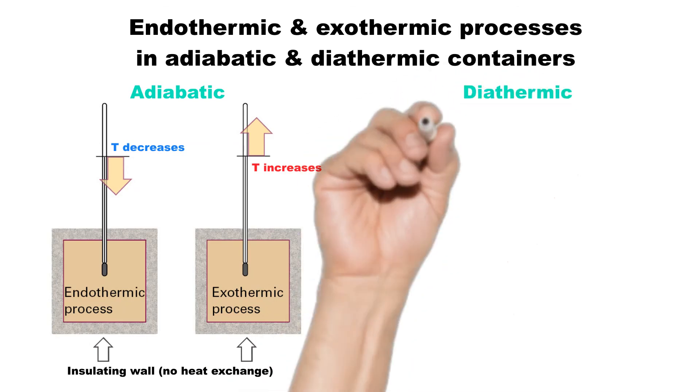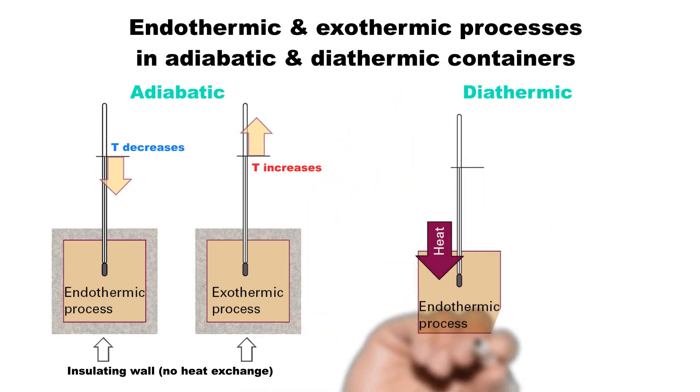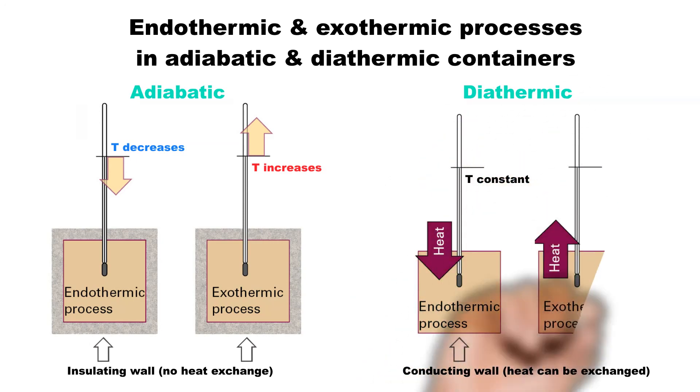When an endothermic process occurs in a diathermic container, energy enters as heat from the surroundings, and the system remains at the same temperature. If the process is exothermic, then energy leaves as heat, and the process is isothermal.